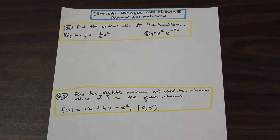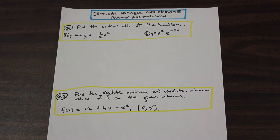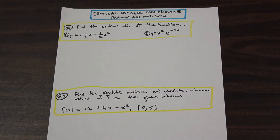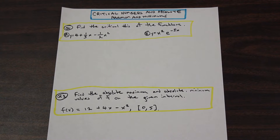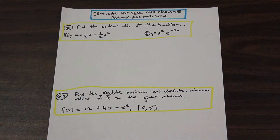Congratulations if you've gotten this far in the course and you're understanding everything. So what is a critical number? Well, a critical number is: if we take the derivative of the function and equal it to zero and solve for x, the values of x that we get within a certain interval are the critical numbers of the function.